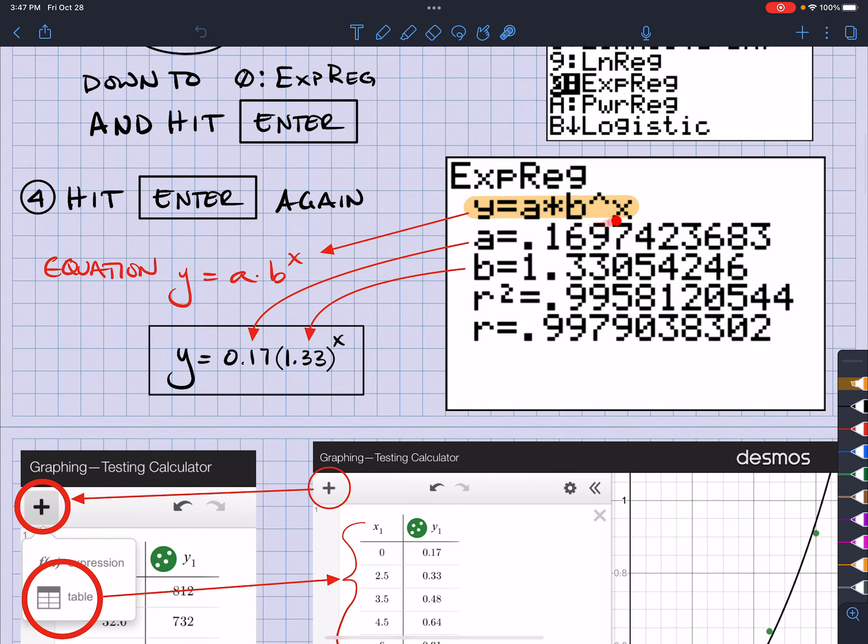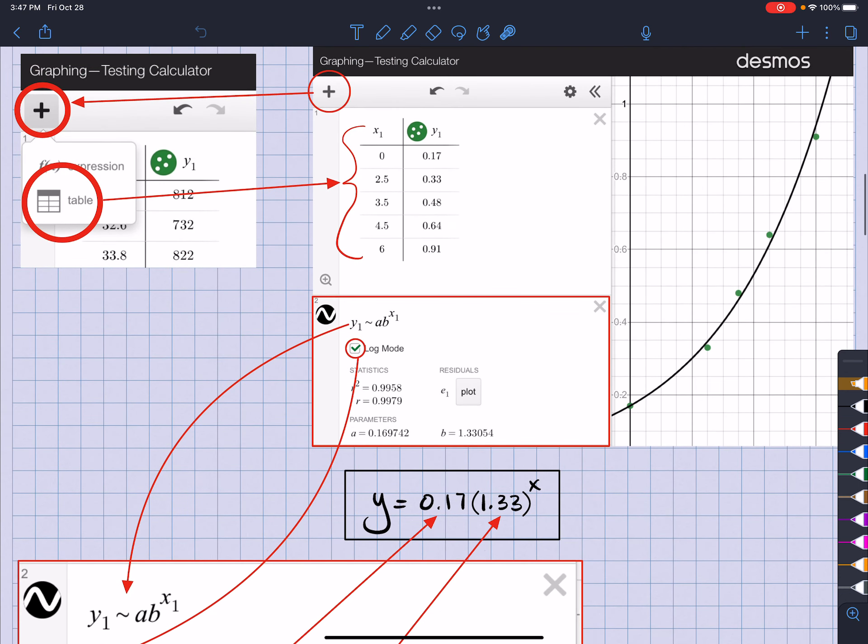So, the nice part about the TI-84 is that that equation is already there for you, where on Desmos, you're going to need to actually know that formula. Now, since this is Y sub 1 and this is X sub 1, that's where we're going to put those in. Make sure you check off log mode.